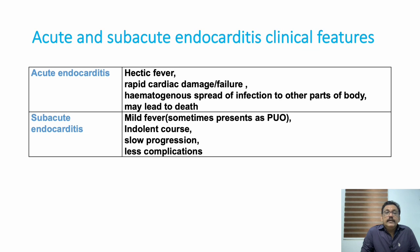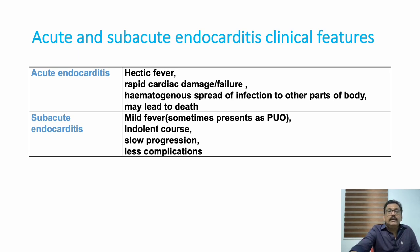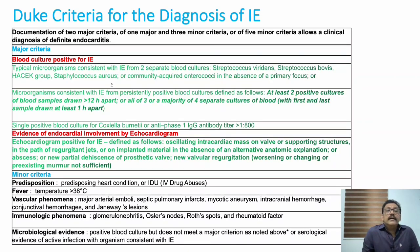Subacute infections can sometimes present as pyrexia of unknown origin (PUO). When treating PUO, many doctors start antibiotics without knowing the exact diagnosis. If antibiotics are continued, the patient remains with very low symptoms even when the infection is not completely treated. Some patients with low-level clinical features fall into this subacute endocarditis category.